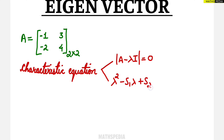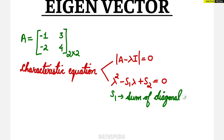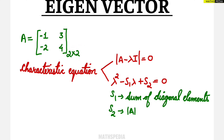The second method uses the formula: lambda squared minus S1 times lambda plus S2 equals zero. S1 is the sum of the diagonal elements of A, and S2 is the determinant of A. When you apply these two values S1 and S2, you can get the answer directly. I prefer the second method as it is quite easy for 2×2 matrices, but you can choose either method.